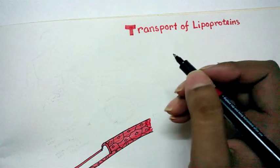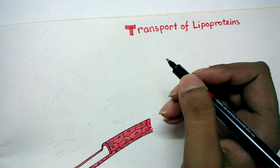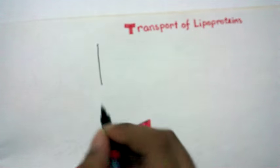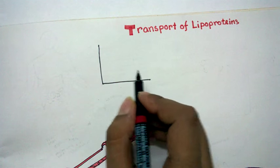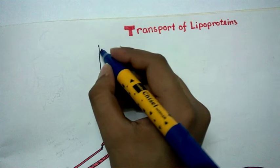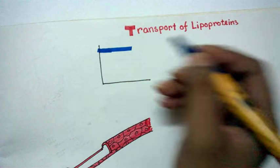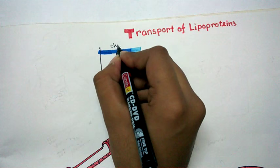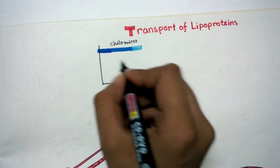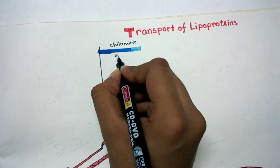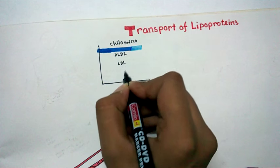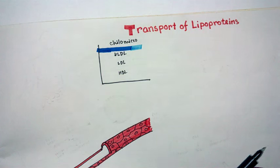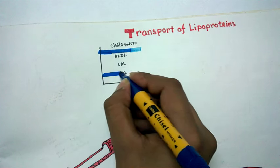In this video I'm going to talk about transport of lipoproteins. Lipoproteins, as the name suggests, are protein plus lipids. There are mainly four types of lipoproteins in our body: chylomicron, VLDL, LDL, and HDL.